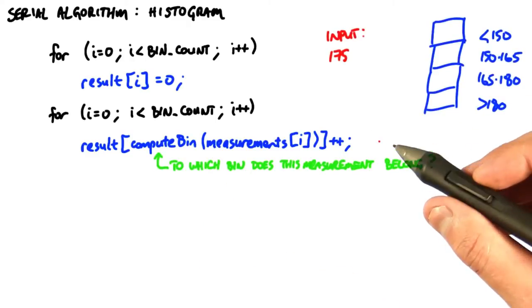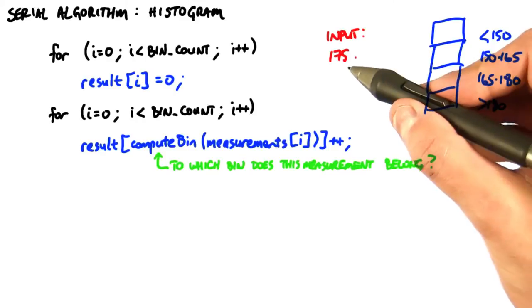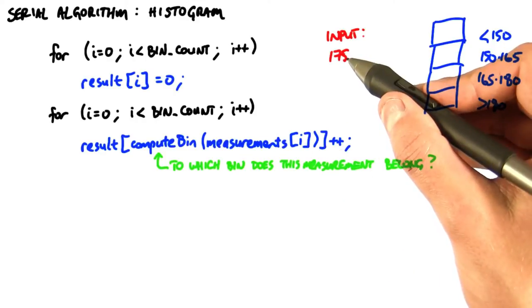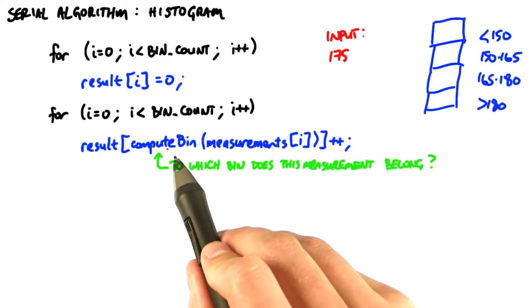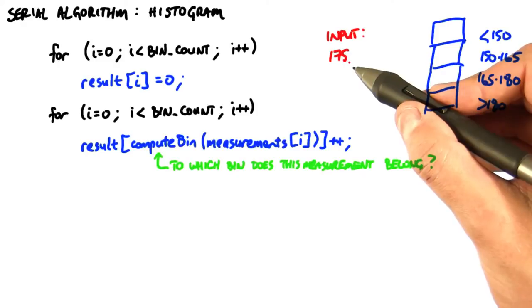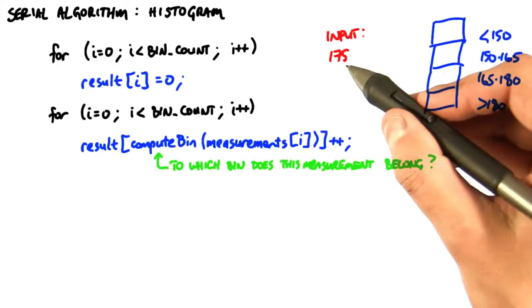For instance, in the previous example, let's say the input to compute bin is 175 centimeters. So, we take a measurement, it's 175 centimeters. Compute bin then decides which of these bins is associated with 175 centimeters. In this case, compute bin would return this bin because it stores all the measurements between 165 and 180.